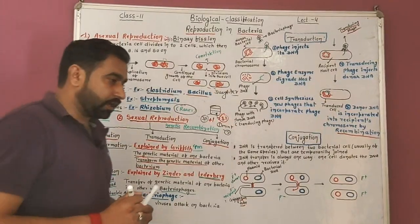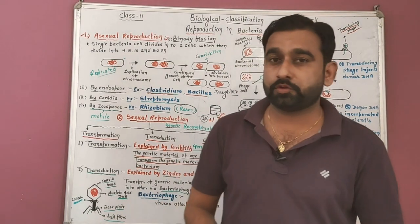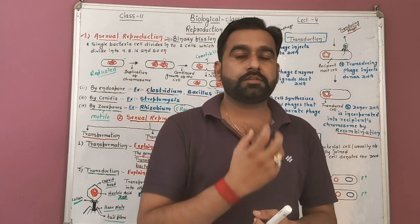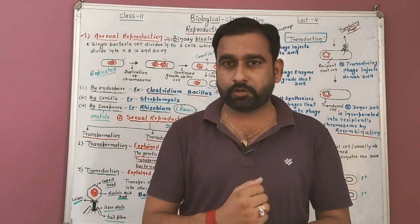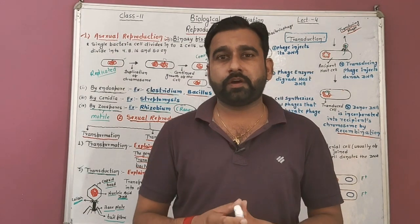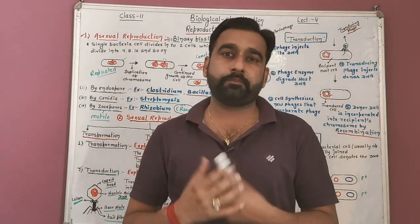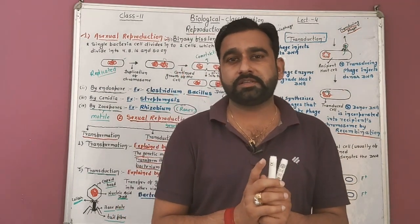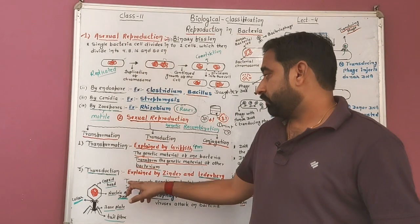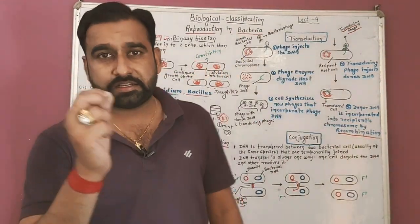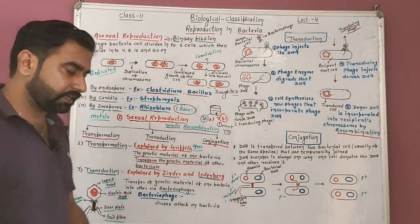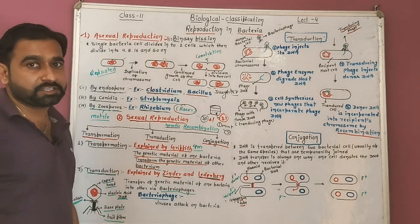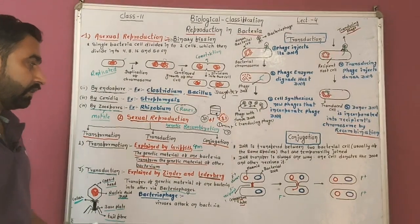Second is transduction. Transduction is very important for biotechnology purposes. What happens here is that foreign DNA particles are inserted into another organism via a vector. These vectors are called bacteriophage, or cosmid, or plasmid — all of these are vectors. In Class 12 biotechnology, we will discuss what a vector is. Transduction is explained by Zinder and Lederberg — remember these scientist names as they are frequently asked.